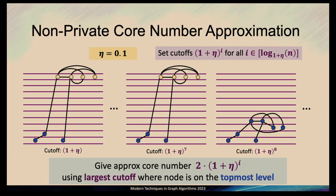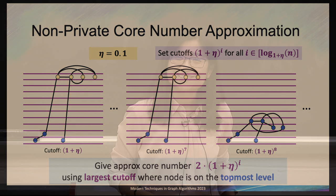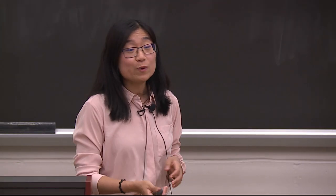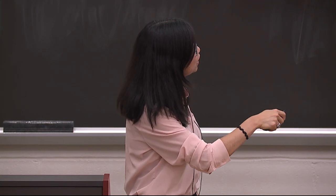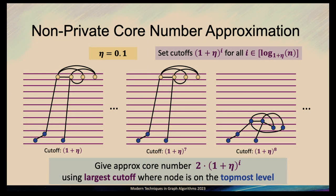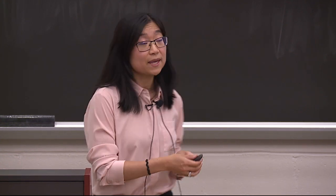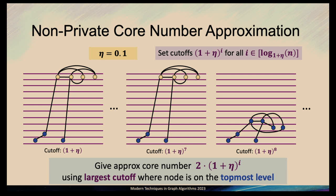Question: Why do we take these different copies? We need different copies to obtain the approximate core numbers. The different copies have different cutoffs, which control how vertices move in the levels. For the first copy, the cutoff is too low, so it does not give an accurate approximation for vertices that have high core numbers.